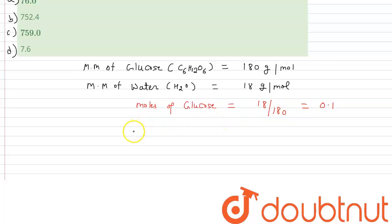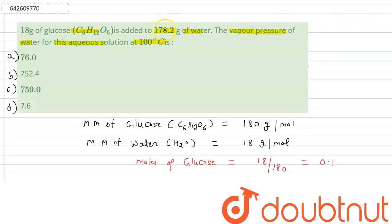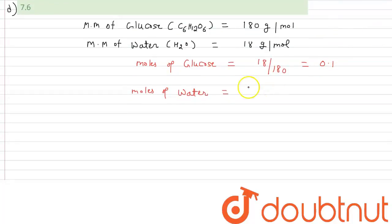Now if I talk about the moles of water — the correct formula is given mass divided by molecular mass. The given mass is 178.2 grams, divided by the molecular mass of 18, which comes out to be 9.9.